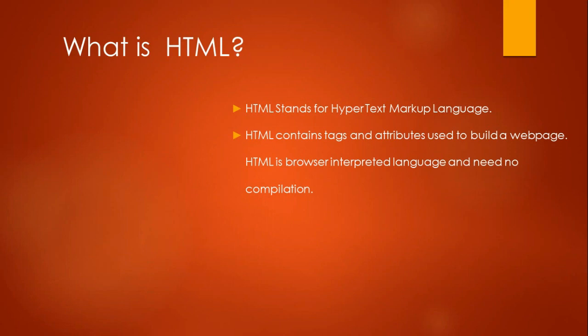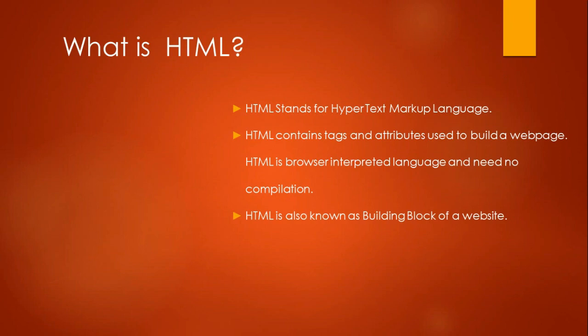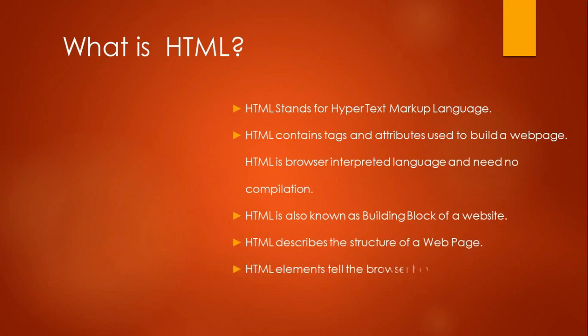HTML contains tags and attributes used to build a web page. HTML is a browser-interpreted language and needs no compilation — there is no compilation required. There is a difference between markup language and programming language: programming language needs compilation, but markup language does not. HTML is also known as the building block of a website, meaning you can architect your web page with it. A web page has a header section, body section, and footer section. HTML describes the structure of a web page, and HTML elements tell the browser how to display the content.